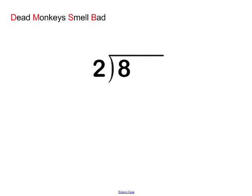The first thing we're going to do is you're going to ask yourself, Dead Monkeys Smell Bad, what is the D? The D stands for divide. So the first thing you have to ask yourself is 8 divided by 2. How many 2s can I get out of the number 8? If you said 4, you are correct. So we're going to put the 4 right above the 8 because the 8 was the number we were dividing up. And it needs to make sure and line up.